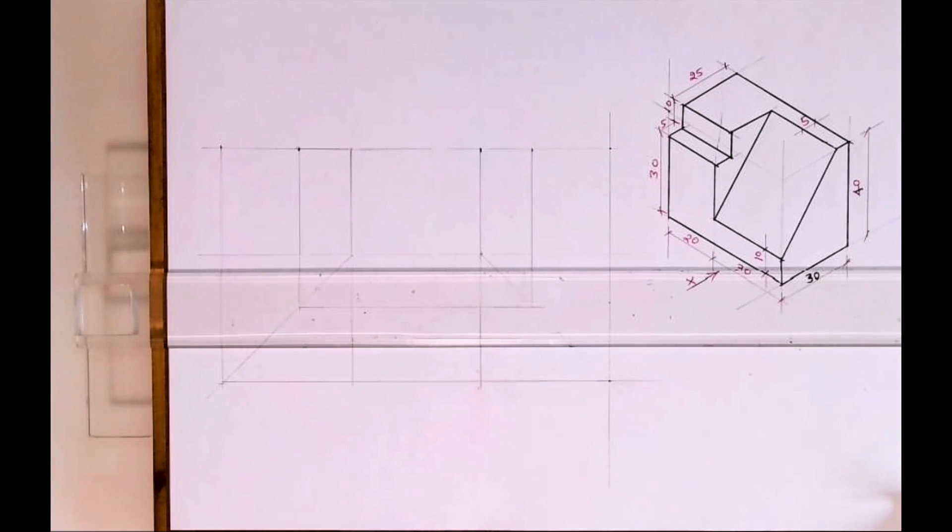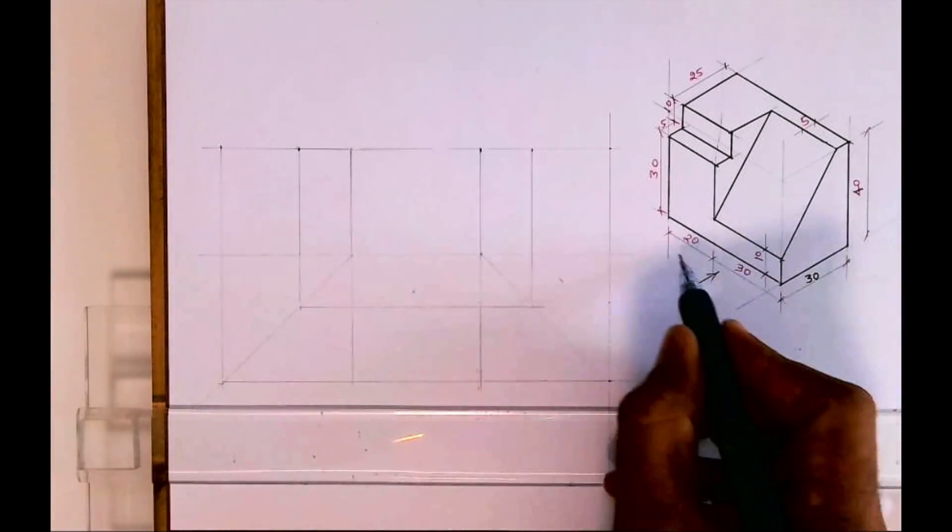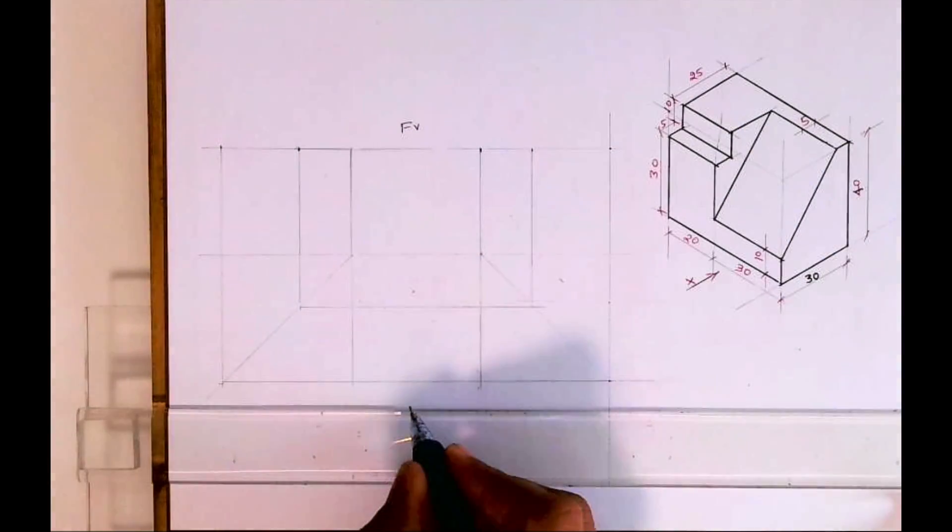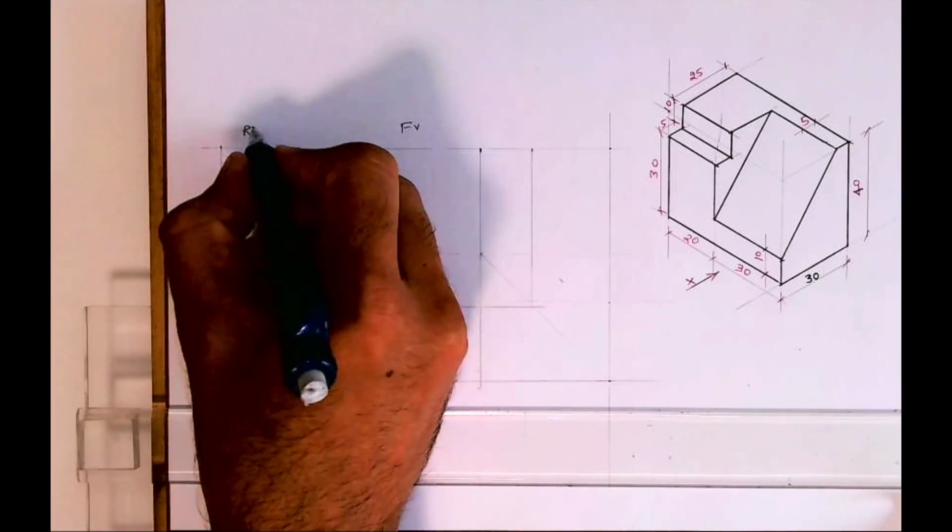Welcome to technical drawing. Today we'll see how to draw front view, top view, left inside view, and right inside view. Front view length is 50. This is top view, side view, right inside view we will draw it here.